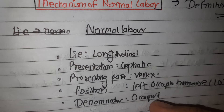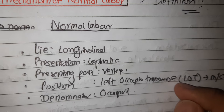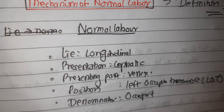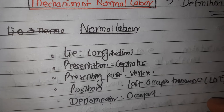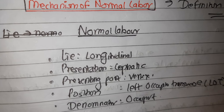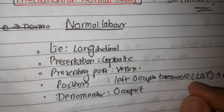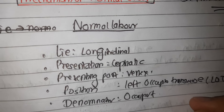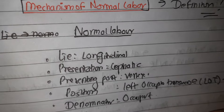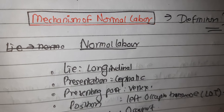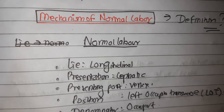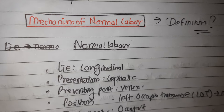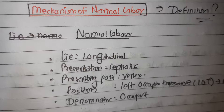In normal labor, the head enters the brim of the pelvis more commonly through the transverse diameter in 70% of cases, and to a lesser extent through one of the oblique diameters. Accordingly, the position is either occipital lateral (also known as occipital transverse) or oblique — left occipital anterior, left occipital posterior, left and right occipital transverse. The engaging anterior-posterior diameter of the head is either the suboccipitobregmatic at 9.5 cm (most common) or, if there is slight deflection, the occipitofrontal. The engaging transverse diameter is the biparietal diameter, also 9.5 cm.